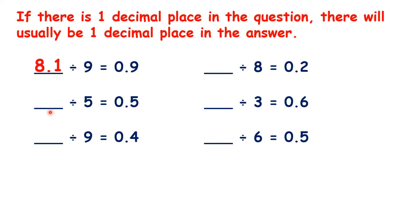We know that 25 divided by 5 is 5, so 2.5 divided by 5 is 0.5. 36 divided by 9 is 4, so 3.6 divided by 9 is 0.4.